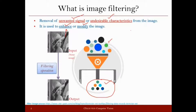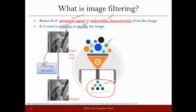Let us see this with the help of an example. In this image, you have pixels which are noisy — a lot of noise you can see. We will try to remove it by performing the image filtering operation. The input to our filter is this noisy image, and when this image comes out of the filter, it becomes a clean image. So here, the objective of performing image filtering is to remove the noise from the image.